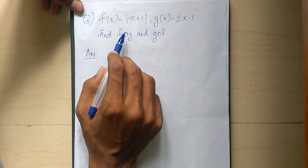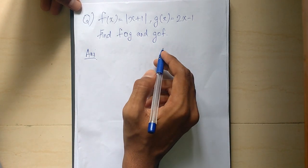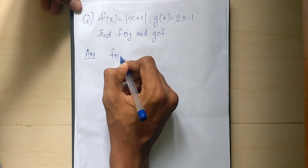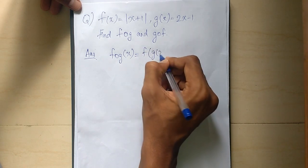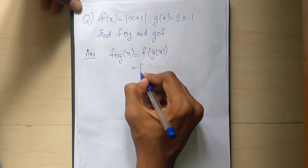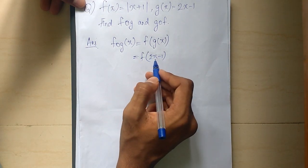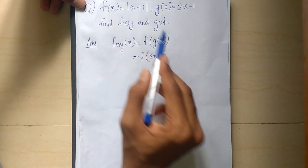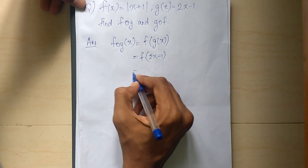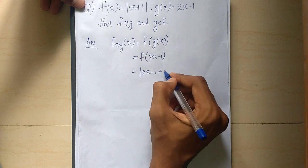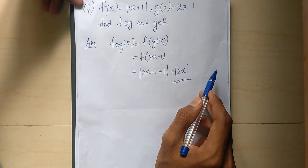Friends, we have 3 questions. This question has g of x. We have f of g and g of f. What is f of g of x? If g of x equals 2x minus 1 and f of x equals mod x plus 1, then f of g of x means we substitute 2x minus 1 into f. So f of g of x equals mod of 2x minus 1 plus 1. This is f of g of x. Now we have g of f of x.